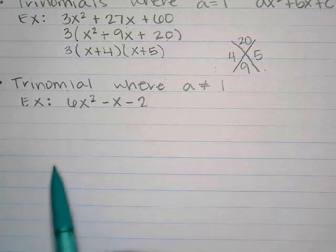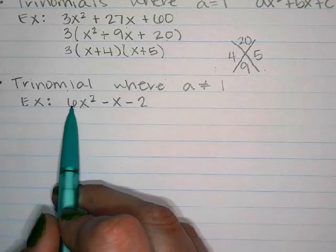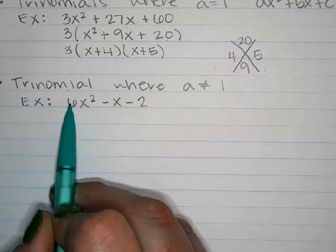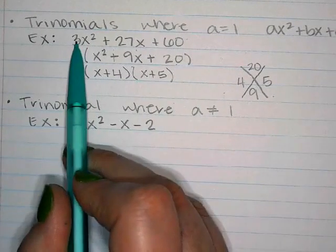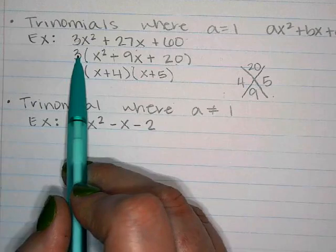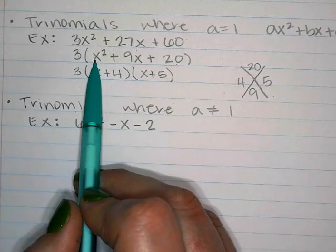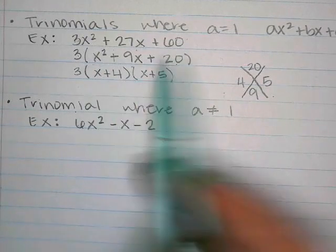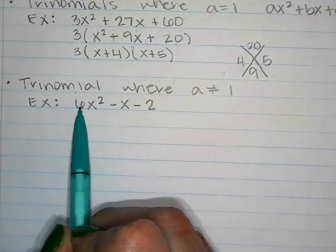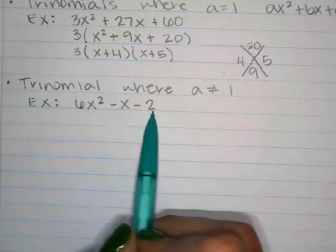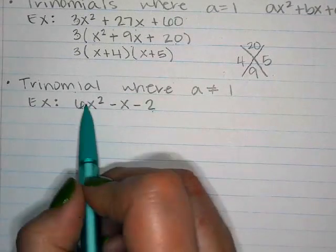For the box method, you start with the number in front. If the leading coefficient is a GCF — like the 3 in our previous problem that we could divide out — then it's the simpler trinomial. But if the number in front can't be divided out of all three terms, like a 6 that only divides some terms, it stays in the problem.